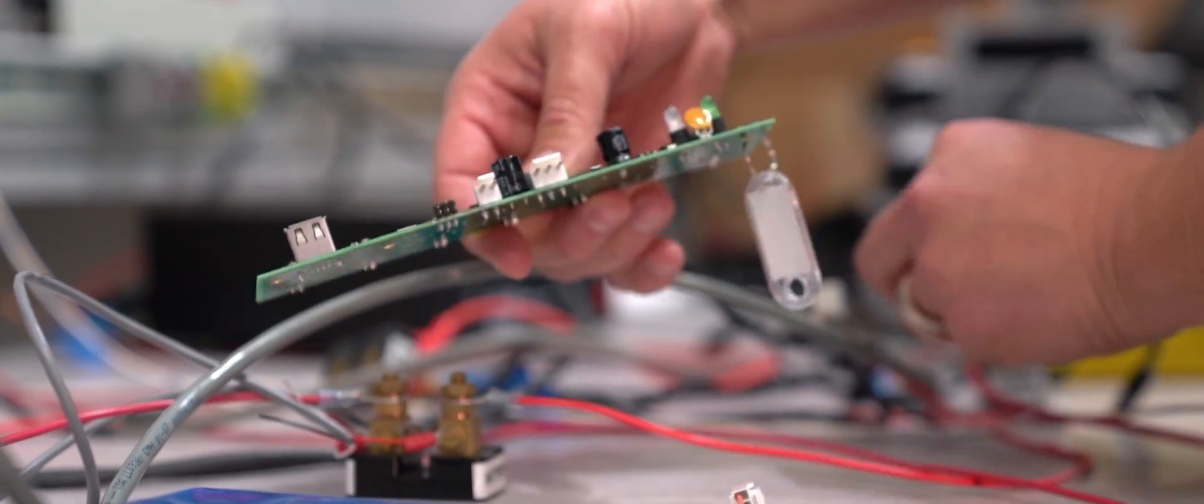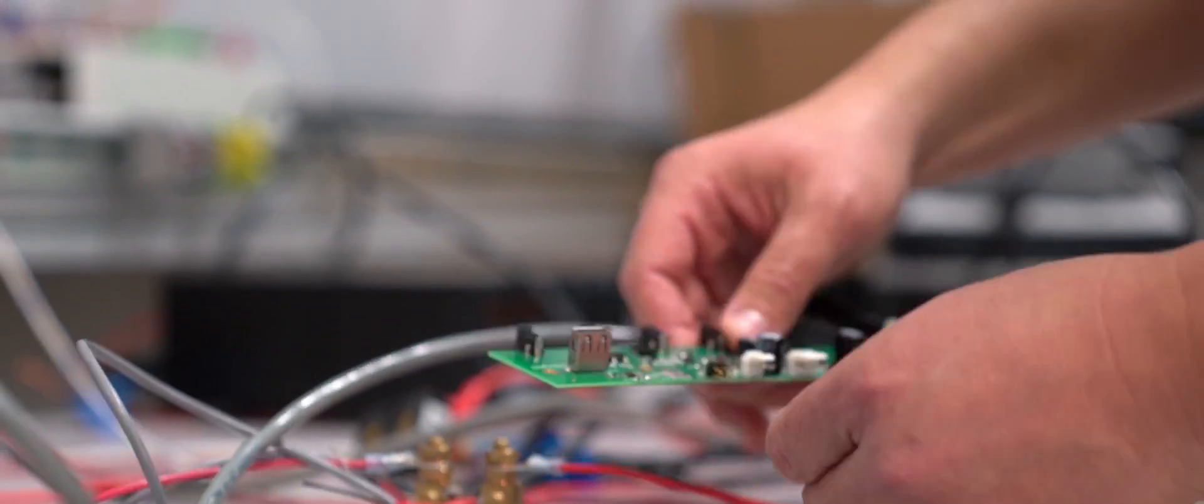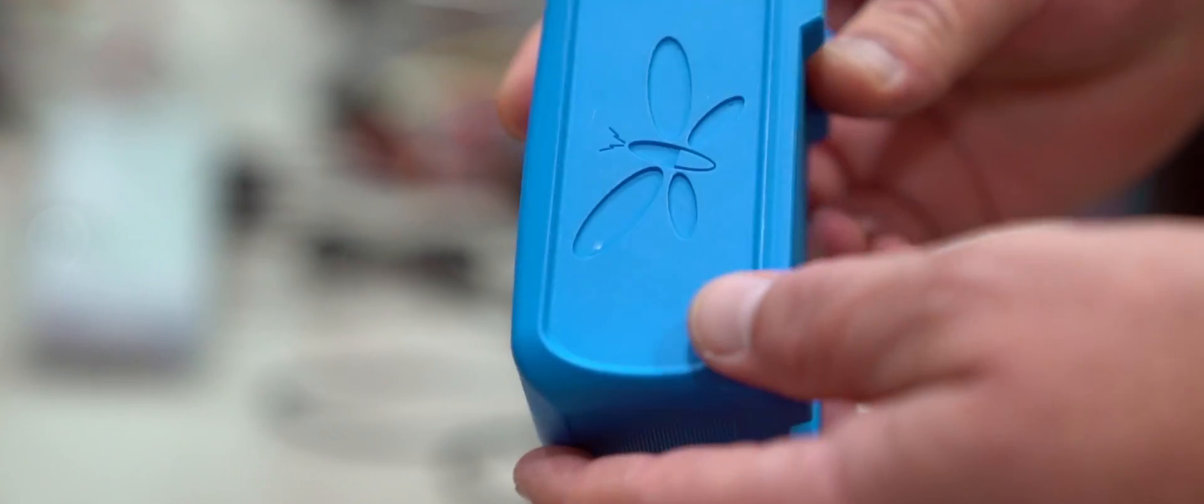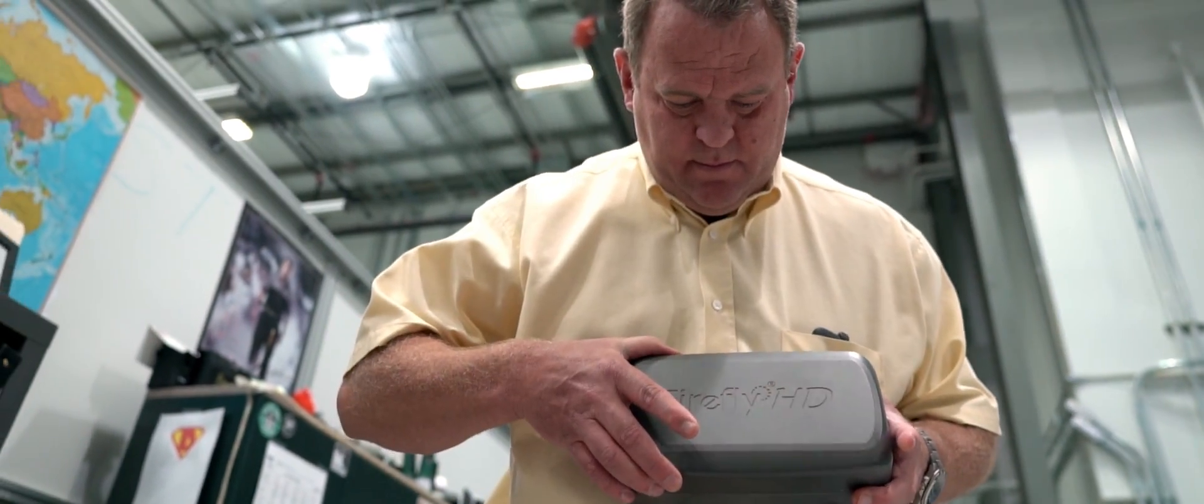For a while we subbed that work out. We realized we didn't have a lot of control over our vendor. There was a time lag between our idea and the design, and by the time we'd get the product back, we'd already had another idea and another iteration. At some point we realized we're going to spend more money on contracting this work than if we just buy our own.